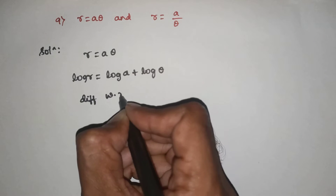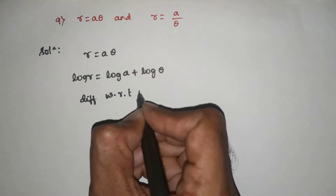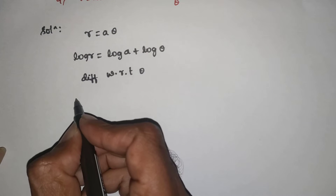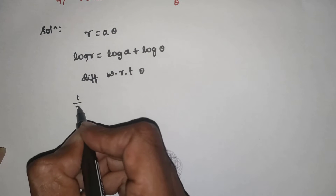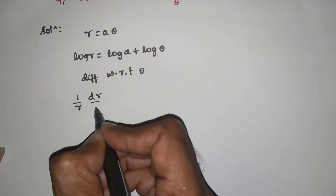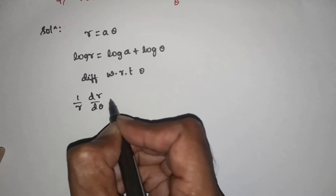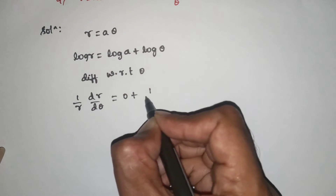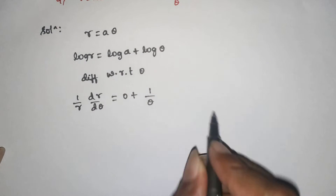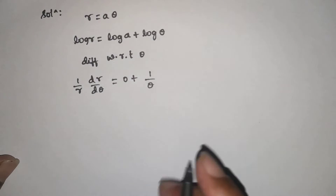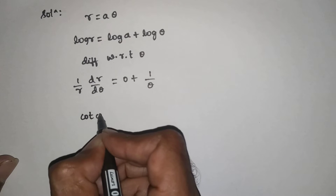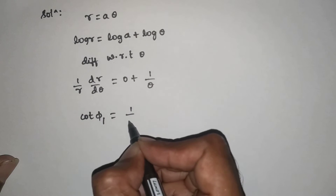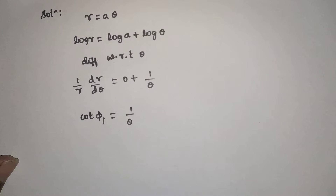Differentiate with respect to theta. The derivative of log r is 1/r times dr/dθ. The derivative of log a is 0, and the derivative of log theta is 1/θ. So 1/r times dr/dθ is equal to 1/θ.